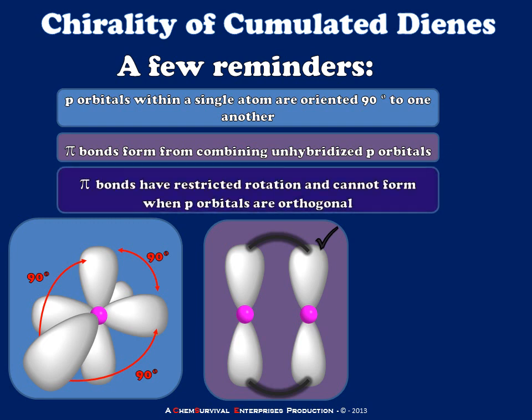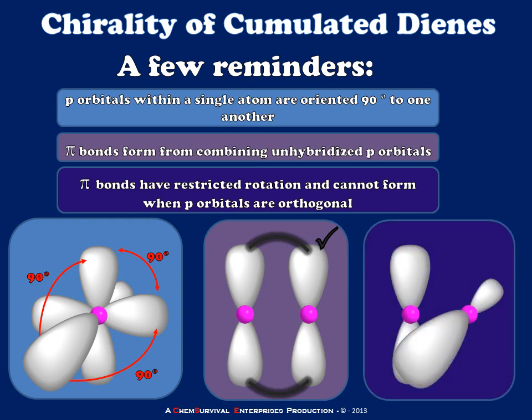And finally, I'd like to remind you that these pi bonds, because of their arrangement, have restricted rotation, and so they cannot form when those p orbitals are orthogonal to one another, like they are in the example down here on the right. So pi bonding can only occur when the appropriate alignment of p orbitals is available.